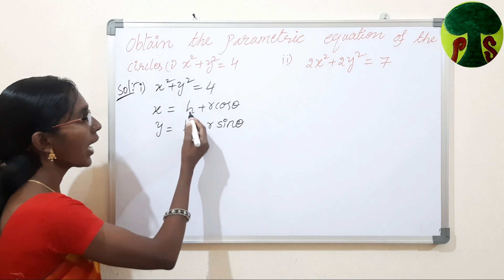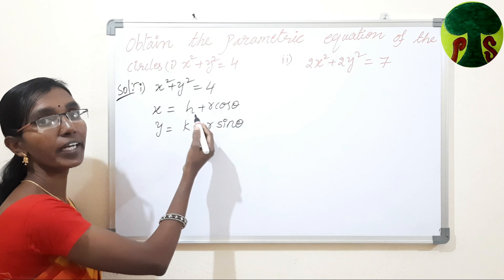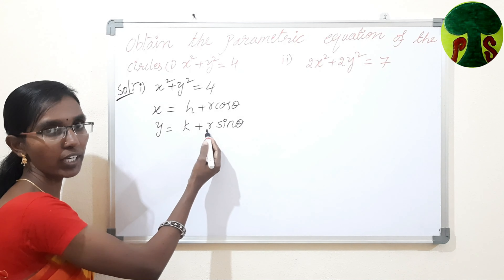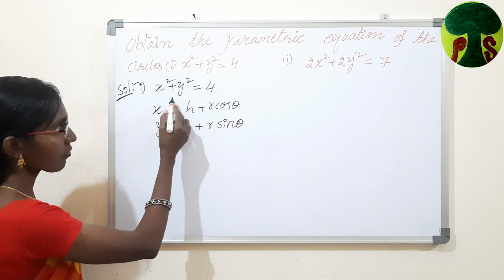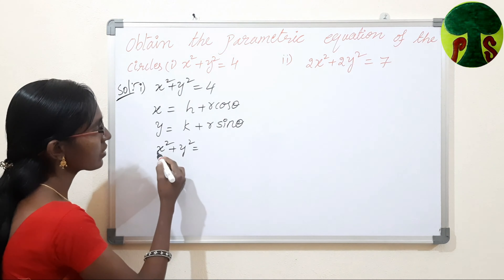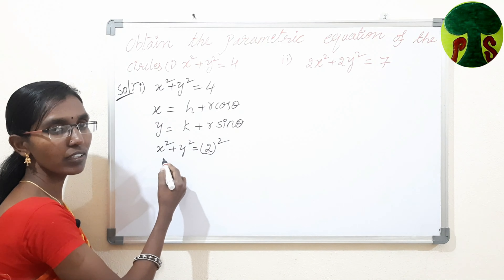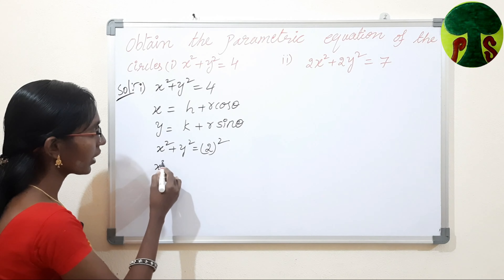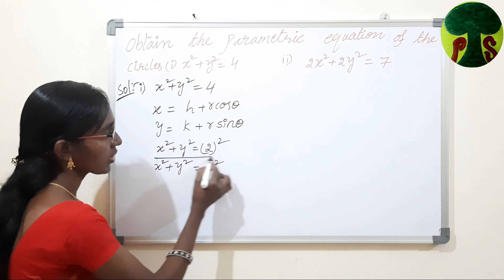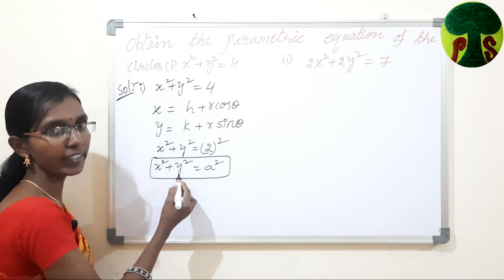Here, h comma k represents the center of the given circle, and r is the radius of the circle. We need to find h, k, and r values. Now, I am converting x squared plus y squared equals 4 as x squared plus y squared equals 2 squared. It is in the form x squared plus y squared equals a squared. This is the general form of the circle which has its center at the origin.